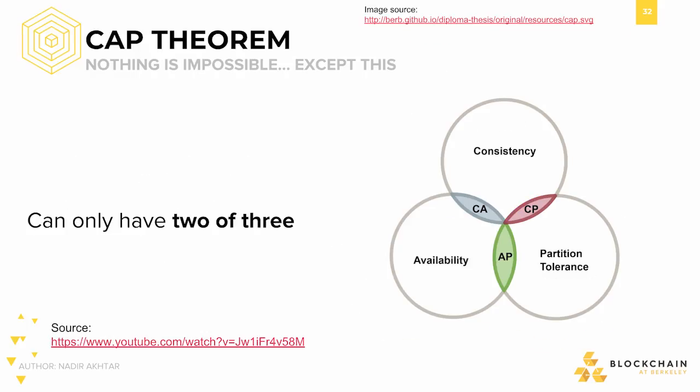So what is the CAP Theorem truly? It's a simple statement: a system can only have two out of these three properties at any given time. The choice must be made between consistency, availability, and partition tolerance. You see this intersection of these three right here? This is what we like to call a magical fantasy land. Decades ago, when distributed systems were still new in academia, several researchers and organizations claimed that they had created systems which had all three properties. We'll give you a quick proof in just a few seconds as to why the CAP Theorem is true.